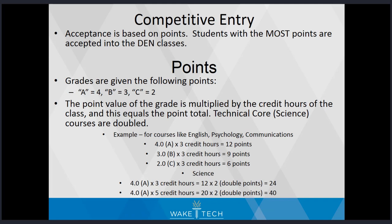Acceptance for both programs is based upon a points system; students with the most competitive points are accepted into the DEN courses. Points are awarded as follows: grades of A equal 4.0, B equals 3.0, C equals 2.0. The point value of the grade is multiplied by the credit hours of the class to equal the point total for that course. Technical courses, which are the science courses, are doubled.